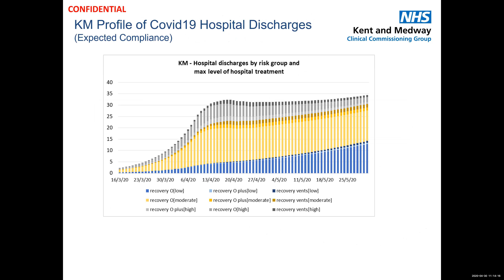We're not just applying national assumptions to the local population based on age — we're also looking at risk profiling of the population, which we can do as a result of work we've done with WSP to segment our population. When we look at discharges, we're not just looking at a total number coming out every day; we're trying to understand those risk groups by the experience they've had in hospital. For example, we'll probably need a different discharge pathway for a high-risk patient who's been through ITU.